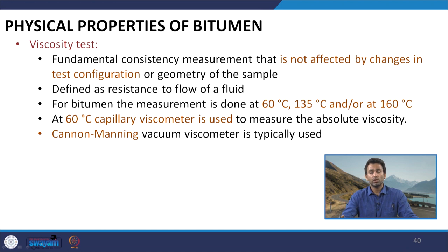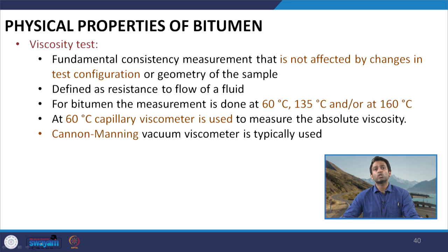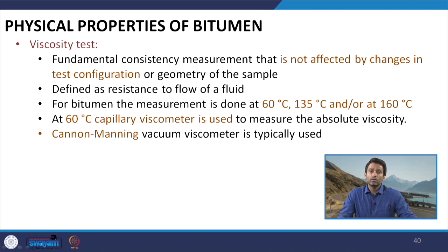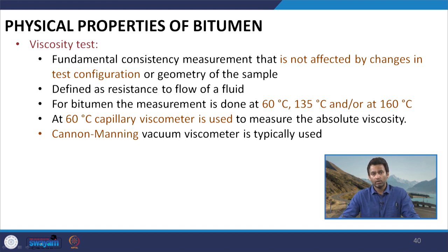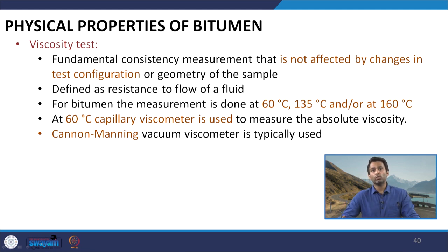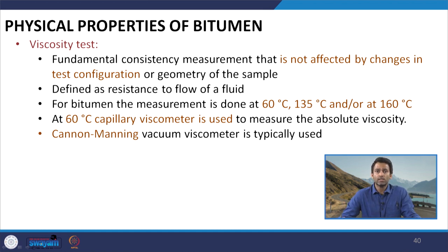When talking about bitumen, we typically measure viscosity at either 60°C or 135°C and also at higher temperatures such as 160°C. The fundamental question is why these particular temperatures are chosen. 60°C has been generally considered as the average maximum in-service temperature of the pavement, so it is important to know the stiffness of the binder at this temperature. We do not want excessively soft binder, otherwise the pavement can show excessive flushing, softening, and permanent deformation.